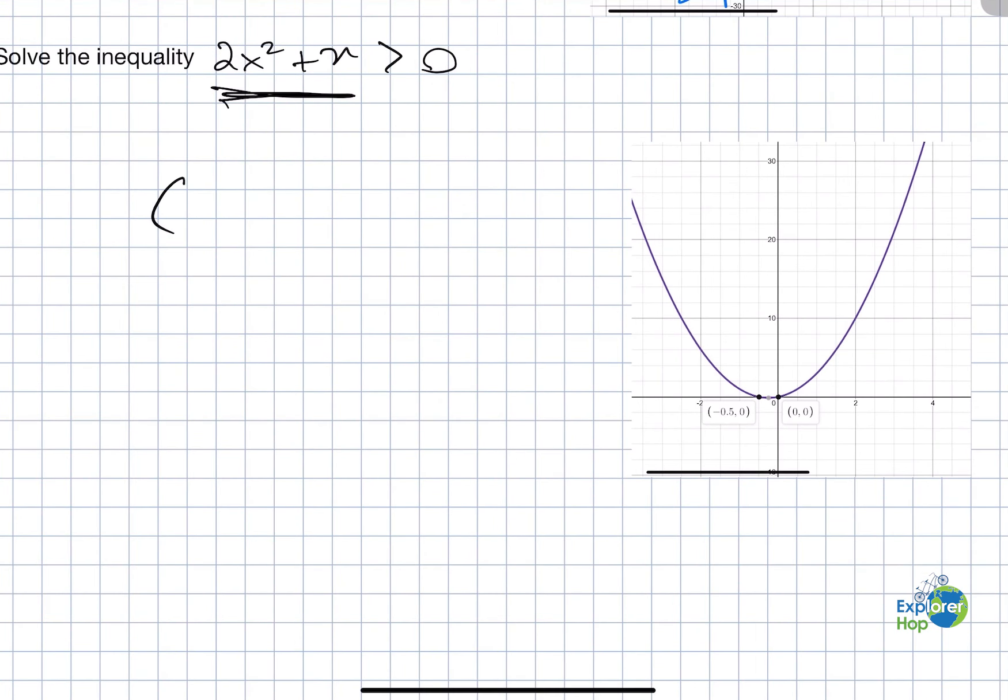Therefore, our answer would be -0.5 to 0, or (-0.5, 0). That's where the graph is less than 0.